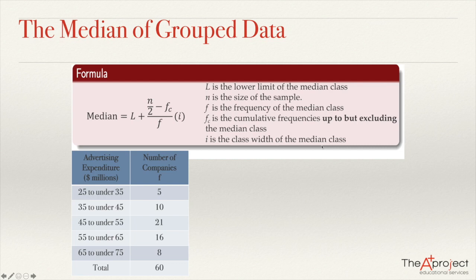If somebody explained this to me this way, I'm not going to understand anything, because I don't know what the median class is. So the first thing is to know what is the median class. We have several classes here, and we need to know which one is the median class. You might think it could be the one in the middle, and maybe that's right. But what we need to do is find the class that has the data exactly in the middle.